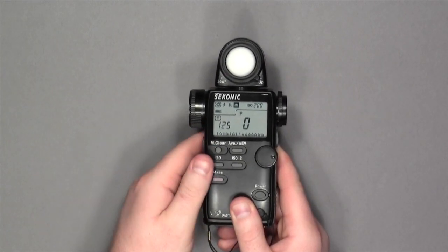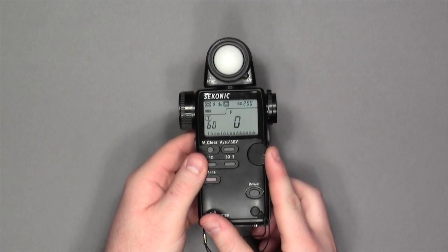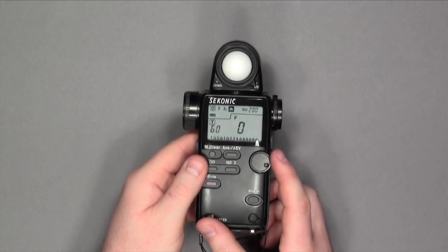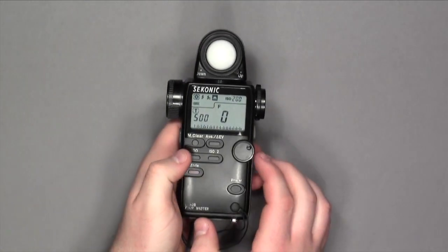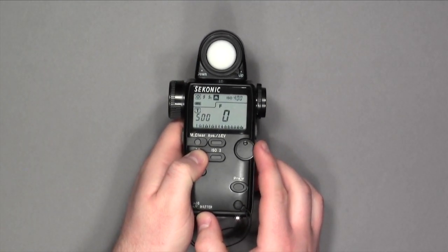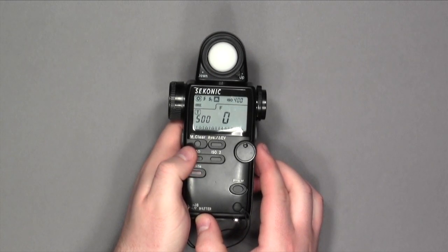We change our shutter speed with this dial too, either up or down, depending on if you want to go lower or higher. So we will set the ISO to 400 and take our first light reading.